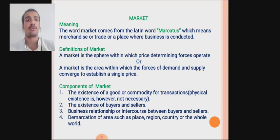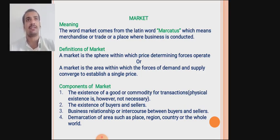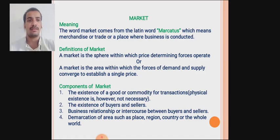First, what is a market? The word 'market' comes from the Latin word 'mercatus,' which means merchandise, trade, or a place where business is conducted. As everybody knows, a market is a place where buying and selling activity is carried out. The definition of market: first, a market is a sphere within which price-determining forces operate. Second, a market is the area within which the forces of demand and supply converge to establish a single price.